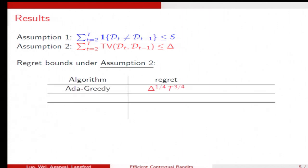Our first algorithm, Ada-Greedy, achieves some regret like this, delta one-fourth t three-fourths. And the second algorithm, Ada-ILOVETOCONBANDITS, achieves this delta one-third t two-thirds. And this is optimal.